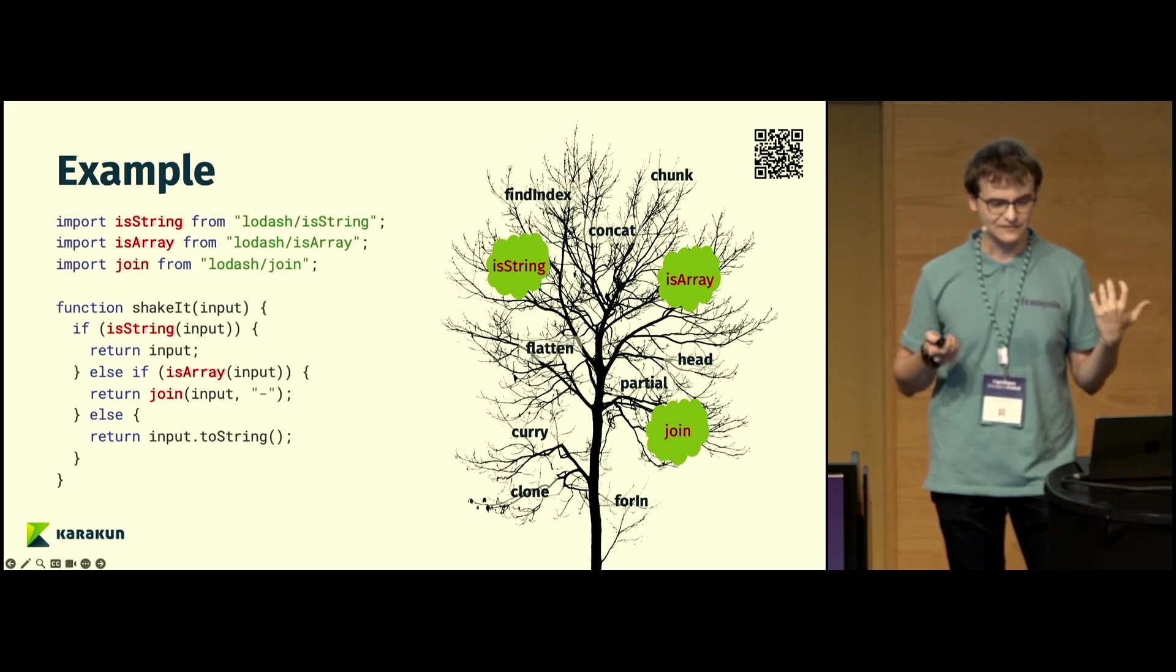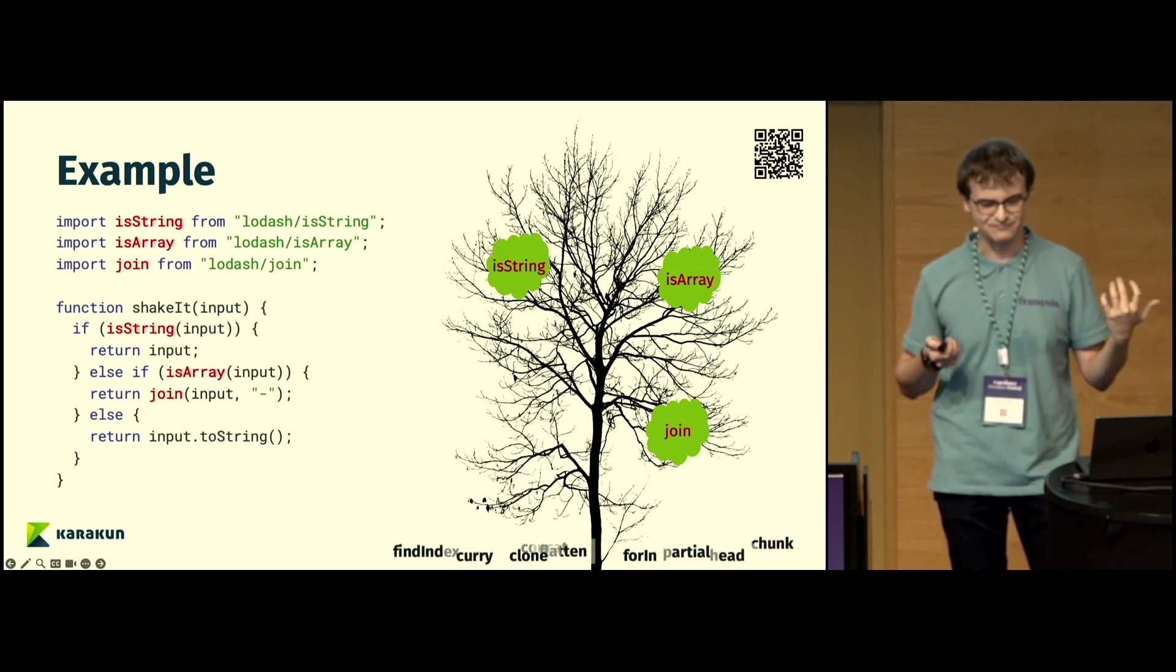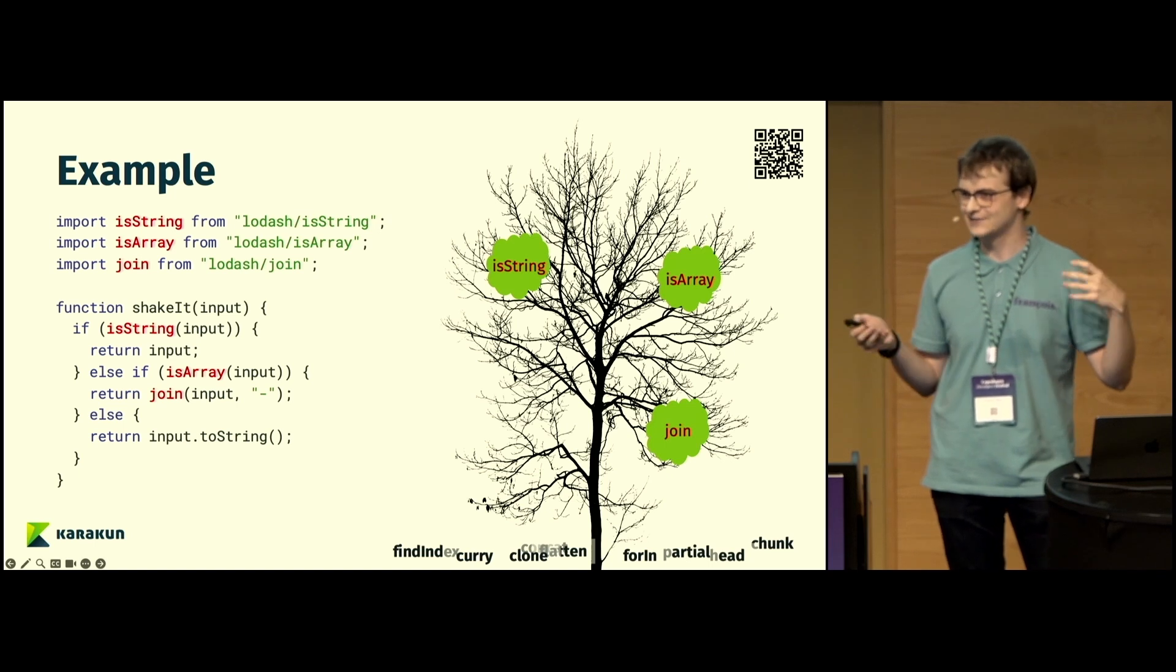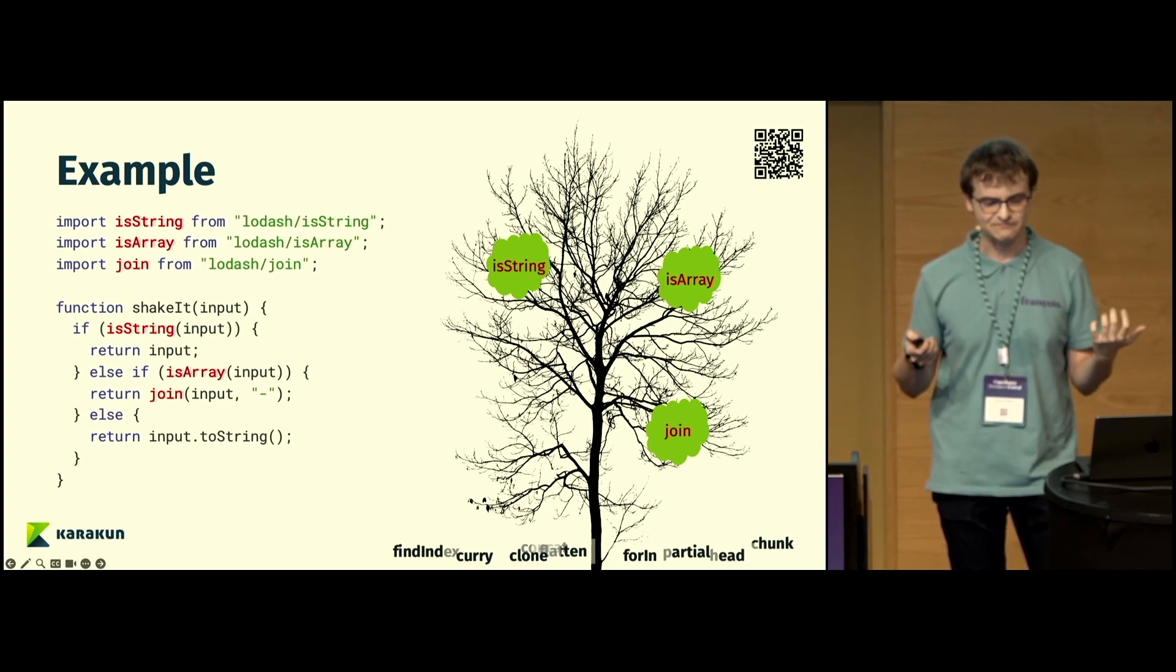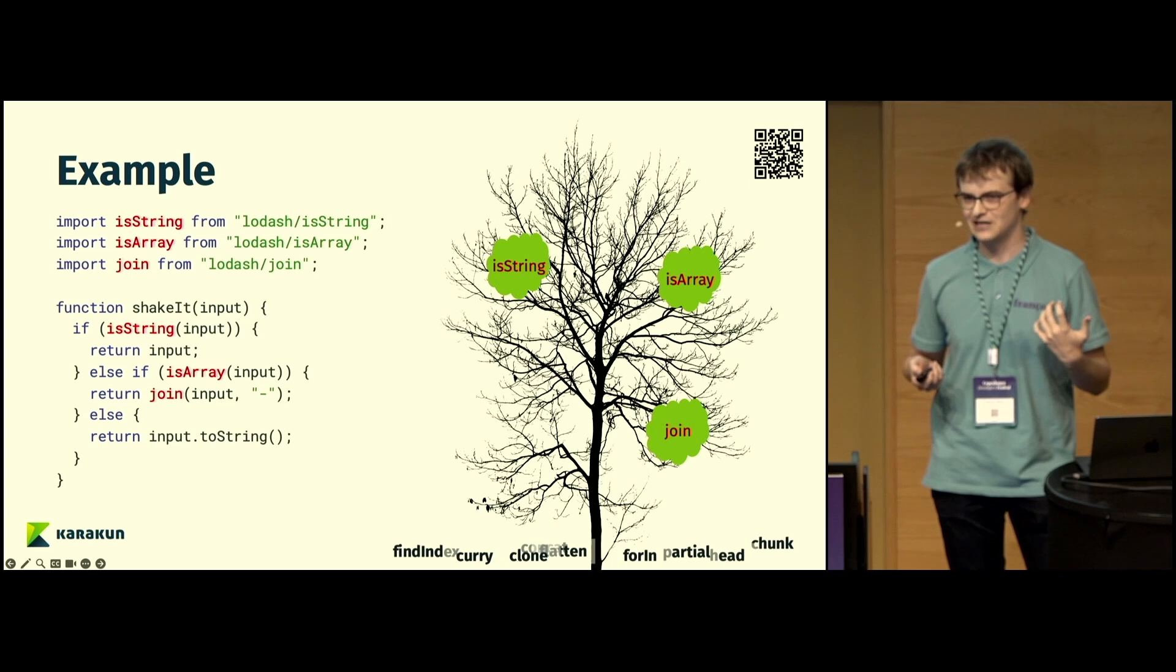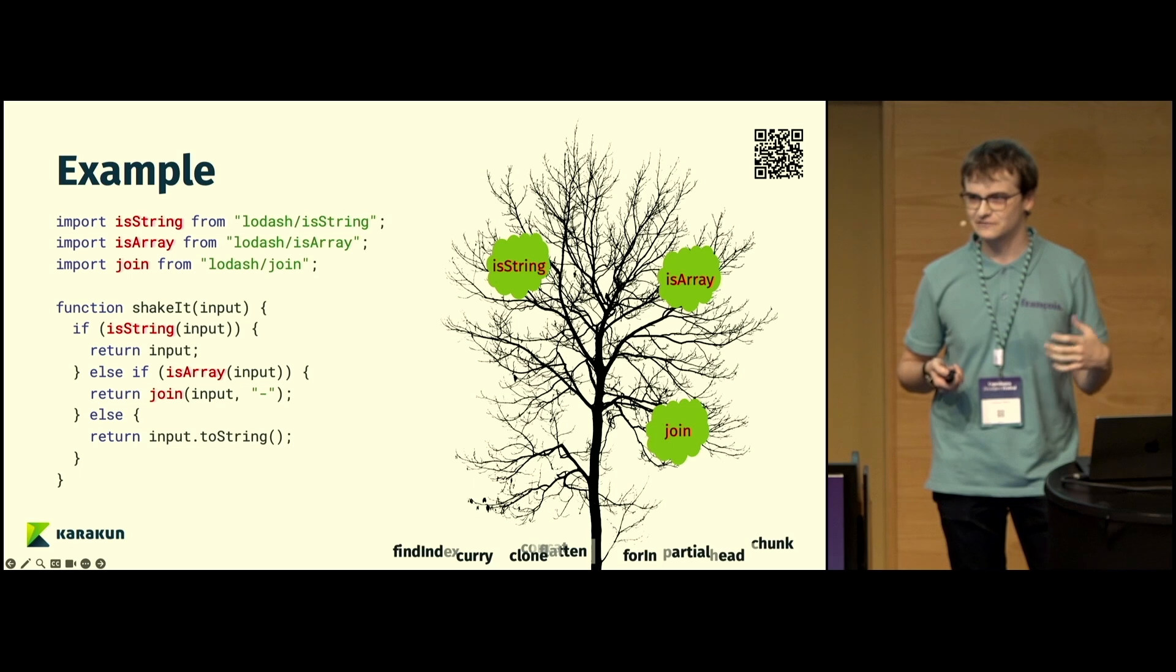Now, if we shake the tree, the methods that hang in there just loosely fall down to the ground and get tree-shaken. This way, we only have the methods isString, isArray, and join. Those are the only methods being applied to the bundle.js file. As you can imagine, this saves a lot of space and makes your website a lot faster.